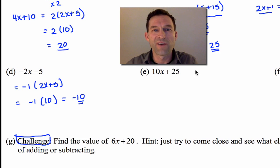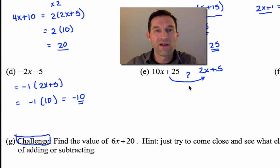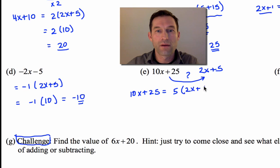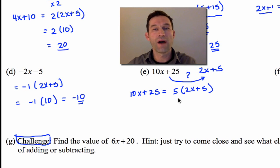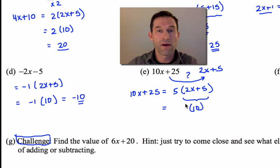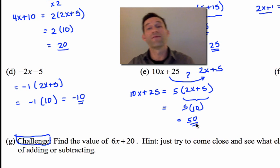Alright, let's take a look at some more of them. Negative 2x minus 5. This is another situation of the distributive property. So negative 2x minus 5 can be thought of as negative 1 times 2x+5, right? Again, just the distributive property, but then that would be negative 1 times 10. And we would get negative 10. 10x+25, let me put my 2x+5 up here. How do we get there, right?